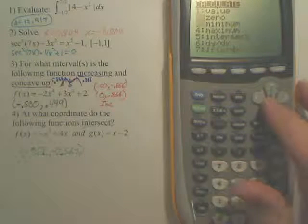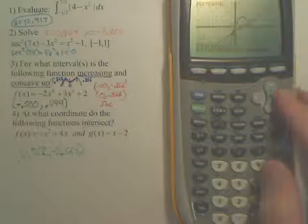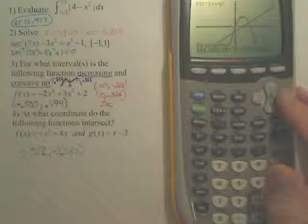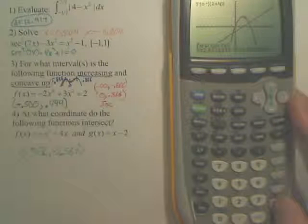And if I want the second one, do the same thing, intersect. Except you need to get closer to that point. If you don't get closer to that point, you won't choose that one.